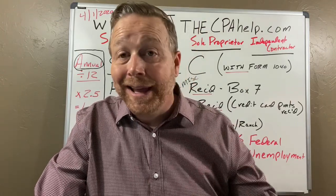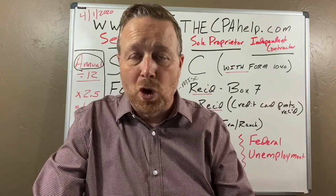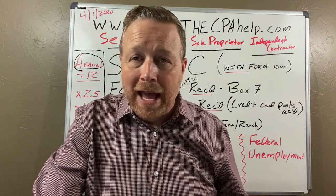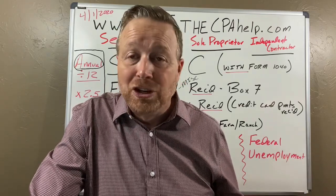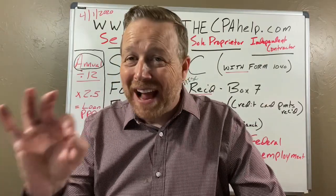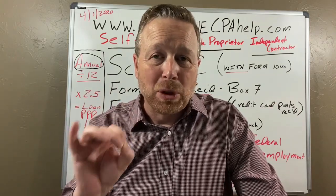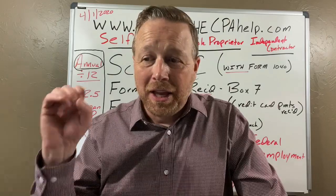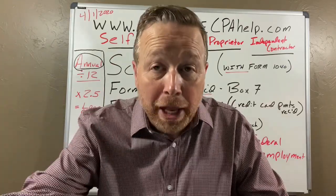The PPP amount would be forgivable, but we have no real guidance yet on how the forgiveness works for the self-employed. What I do know is that as a sole proprietor or independent contractor, spending on utilities, rent, internet, telephone, health insurance, retirement plan match, and interest on business loans will all count. However, in the fine print of the law, the max forgivable amount for non-payroll expenses is 25% of the total. So you can't spend your full $25,000 on rent, utilities, and health insurance and expect it all forgiven.